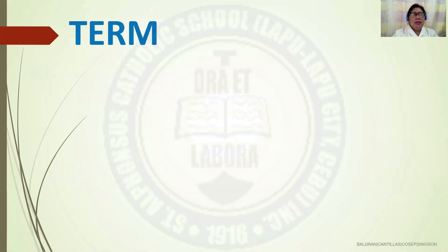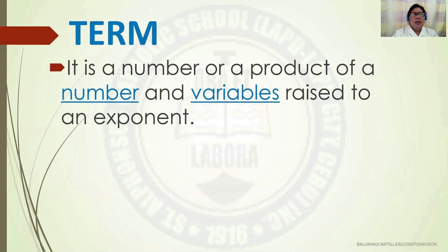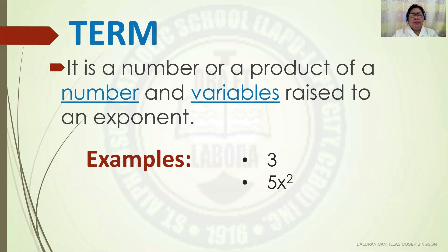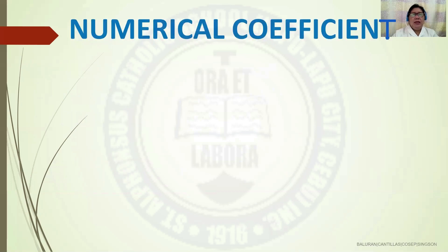Now, what is a term? It is a number or a product of a number and variables raised to an exponent. For example: 3, 5x squared, negative 2x, and 9x squared y.